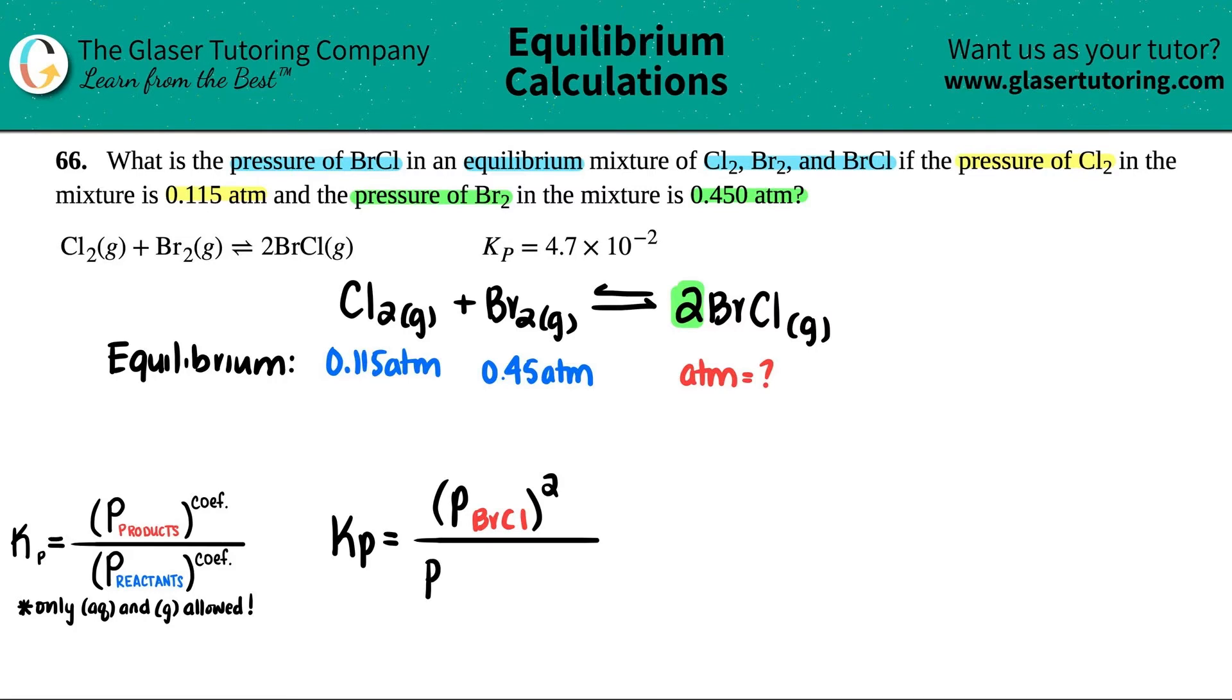Now let's do the reactants. I have two of them - pressure of Cl₂, and there was no number in front so that means just one of them. Then we have our next reactant - they're being multiplied in the formula, not added together - so the pressure of Br₂.